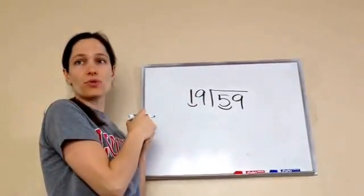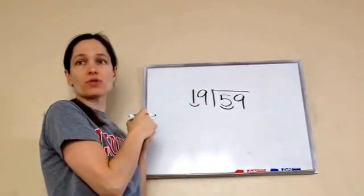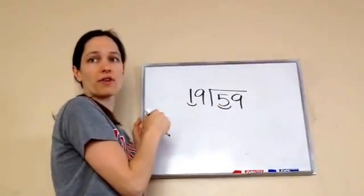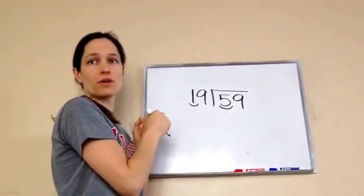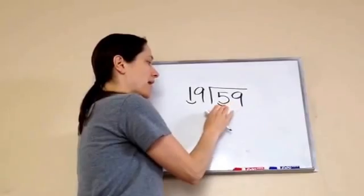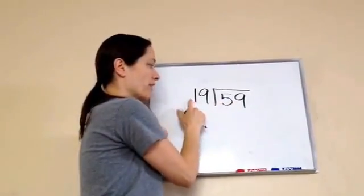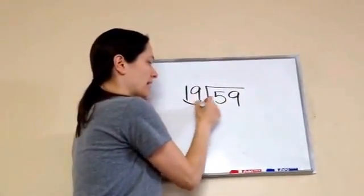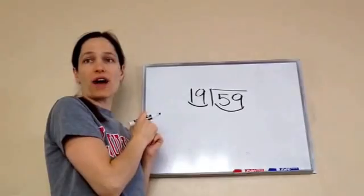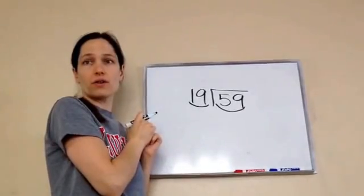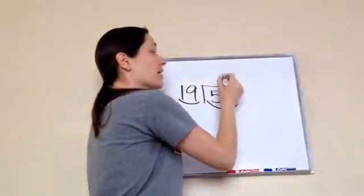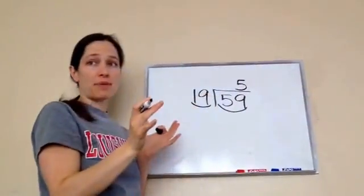What number would you use if we were to choose this number? If we go, what's one times what equals five? Five. Very good. But we're not just doing one and five — we're doing 19 and 59. So where am I going to put my five? Above the nine. Very good. Watch what happens here, Eli.